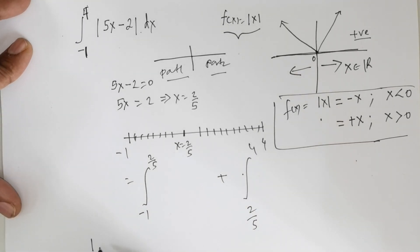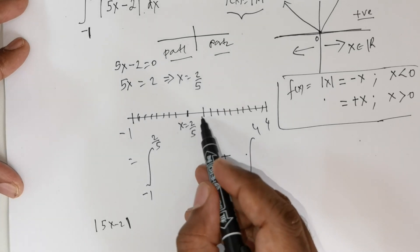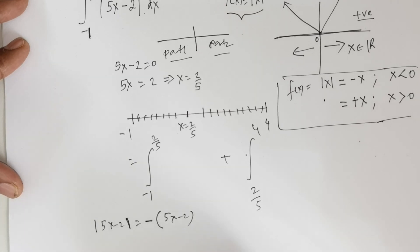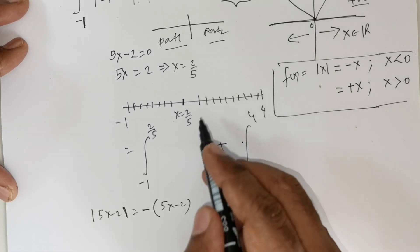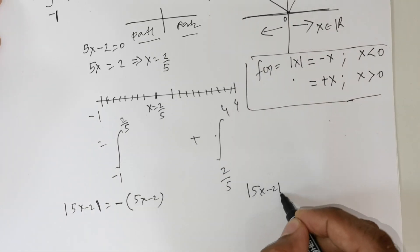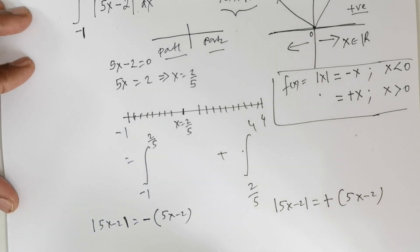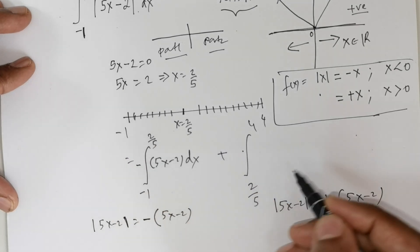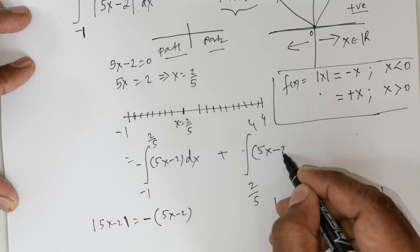Now, how do we get the functional value? We have the modulus of 5x minus 2. For all values on the left-hand side, the modulus of 5x minus 2 equals negative (5x minus 2). For all values on the right-hand side, it equals positive (5x minus 2). So we substitute these values: the first integral has negative(5x minus 2) dx, and the second integral has (5x minus 2) dx.